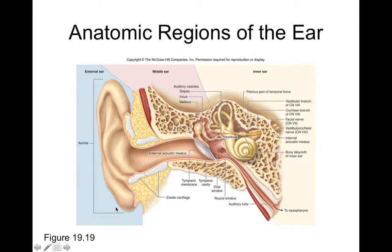We can see those regions on this next slide. What's shown in blue here is the external ear. It's going to contain things like the auricle, which is the main part of the ear, your external acoustic meatus, which is the outer ear canal, as well as part of your tympanic membrane or eardrum.